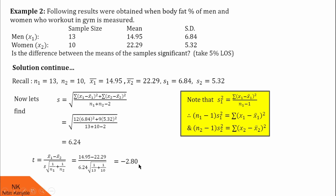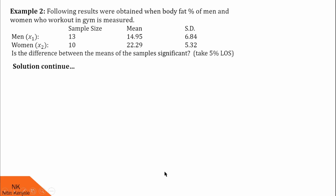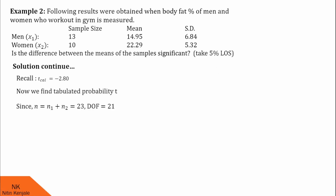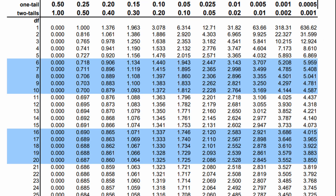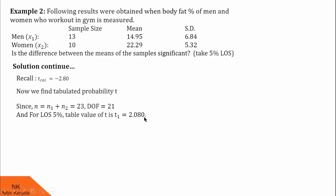In the next step, we are going to find the critical value. For that, we are going to use 5% LOS and degrees of freedom will be n1 plus n2 minus 2. n1 plus n2 is 23, so degrees of freedom will be 21. Now let us see the T-table for degrees of freedom 21 and 5% LOS for two-tailed test. For two-tailed test at 5% LOS and 21 degrees of freedom, the value is 2.080. Let us note down this value: critical value is 2.080.